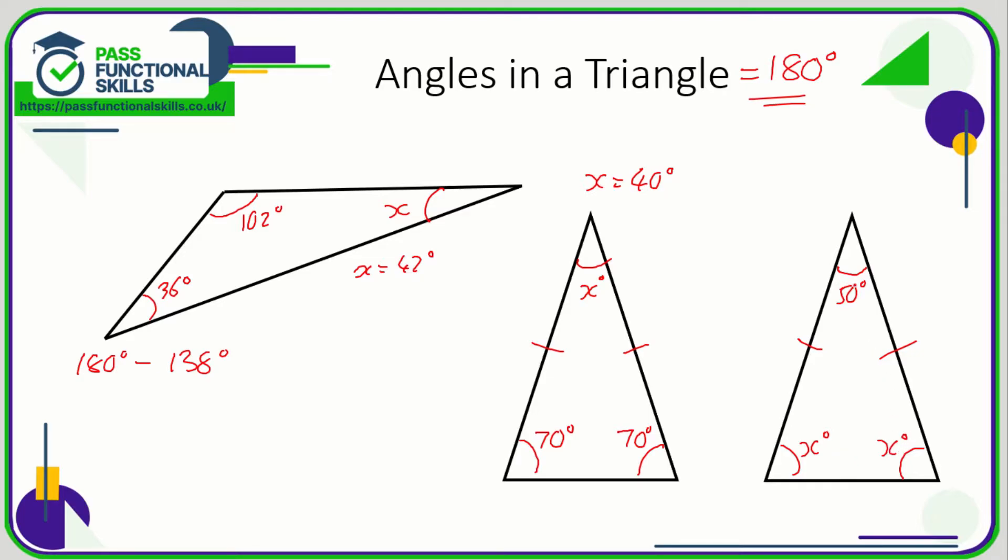So if this angle is 50, 50 plus x plus x equals 180. So if I subtract the 50 from the 180 I have 130, so these two angles must add up to 130. Now these angles are both the same, so if I divide 130 by 2 I can work out that x here is therefore 65 degrees.